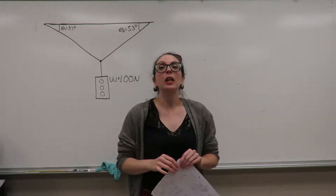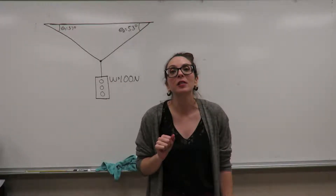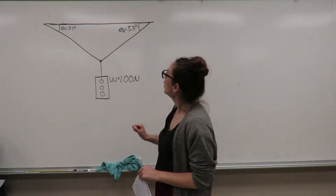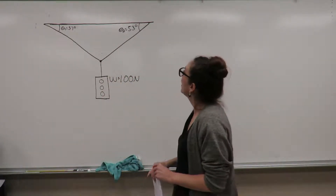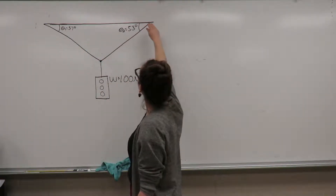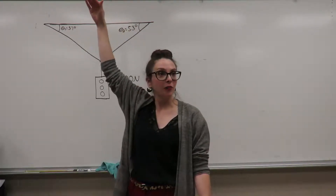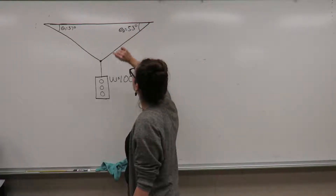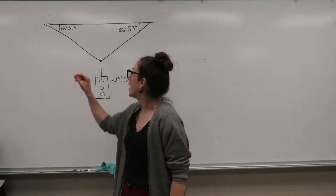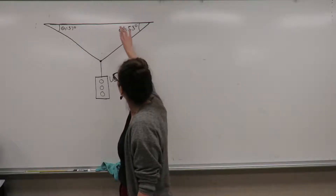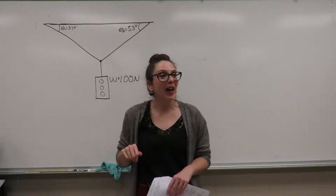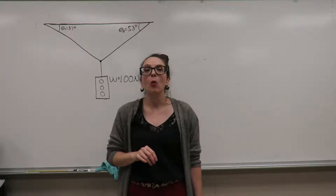A system that is in equilibrium means that the sum of all of the forces acting sum to zero. And so today I'm going to go through this problem right here: a system that is in equilibrium. We have a stoplight that's hanging from two cables. One of these cables meets some surface at an angle with respect to the horizontal of 53 degrees, and the other one makes an angle with respect to the horizontal of 37 degrees.